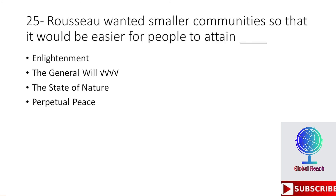Twenty-fifth MCQ: Rousseau wanted smaller communities so that it would be easier for people to attain — options are enlightenment, the general will, the state of nature, perpetual peace. The correct option is the general will. Rousseau wanted smaller communities so that people could more easily attain the general will.